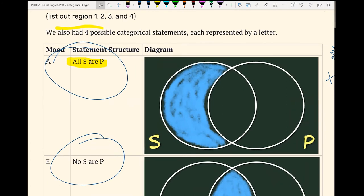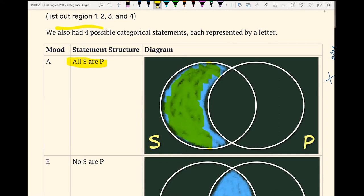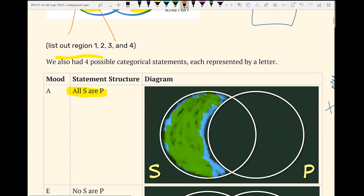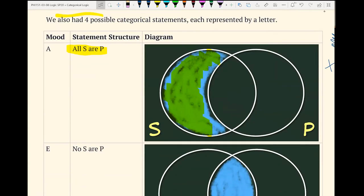We have our first one, all S are P. That's our mood A statement. And to represent that, we just shade in region one, because we're wanting to say that there's no S's that exist that are not also P's. So there's nothing here. How do we represent that? We represent that with this shading.